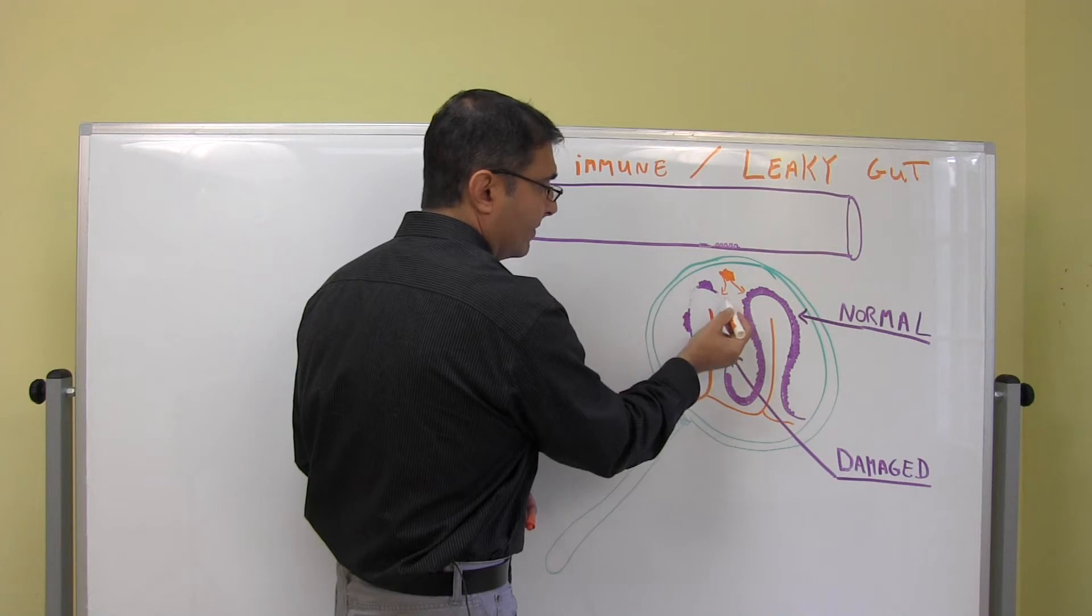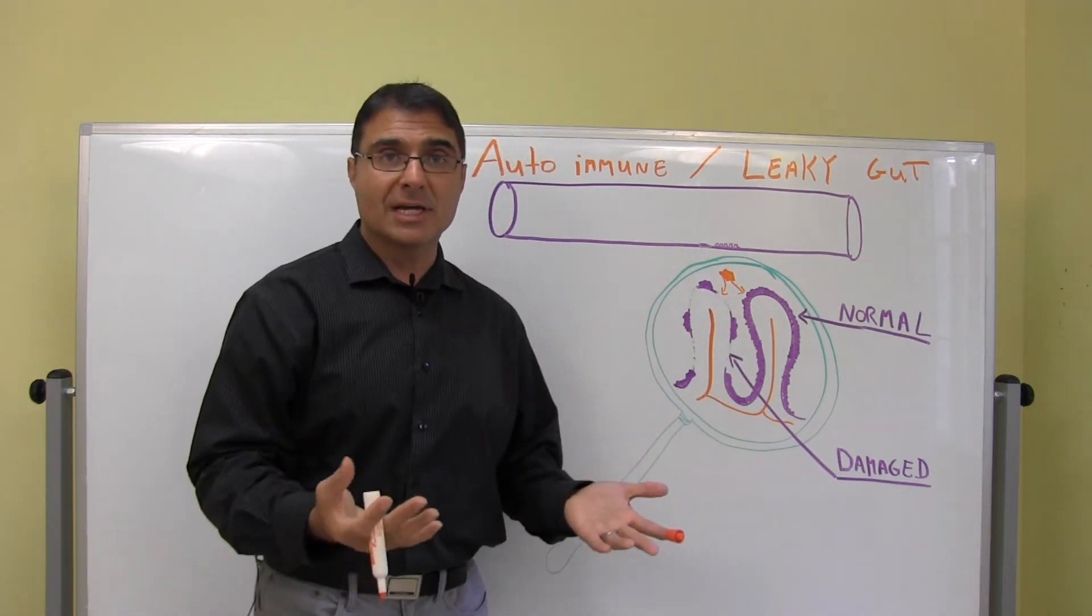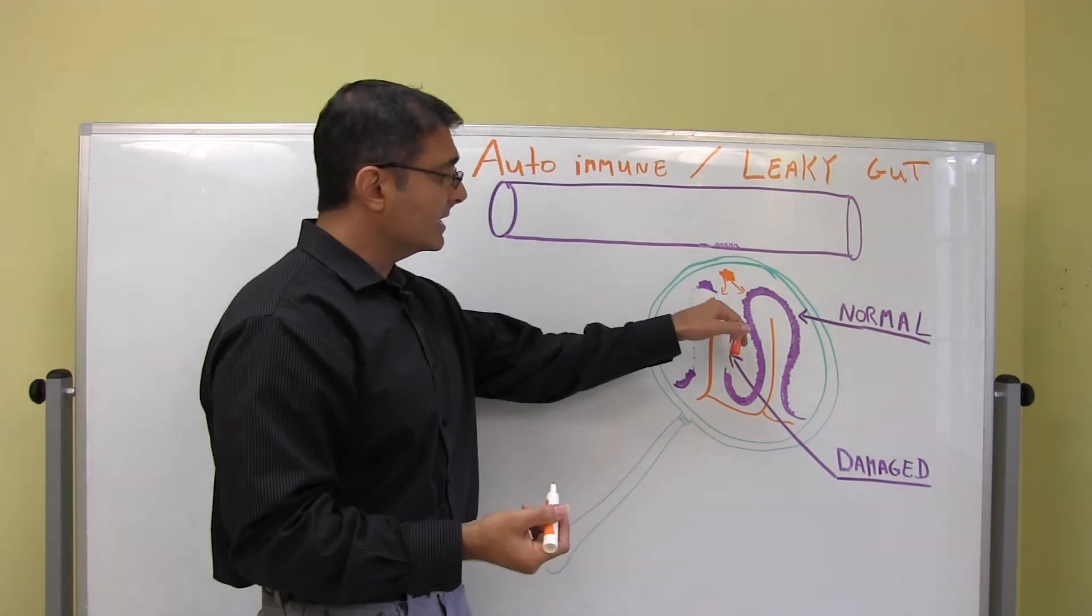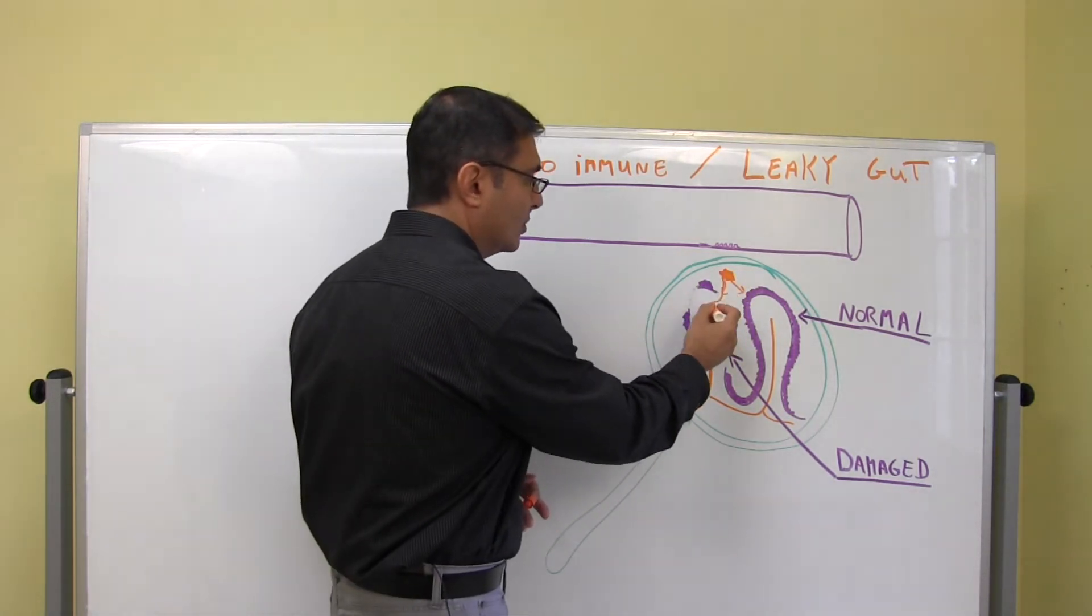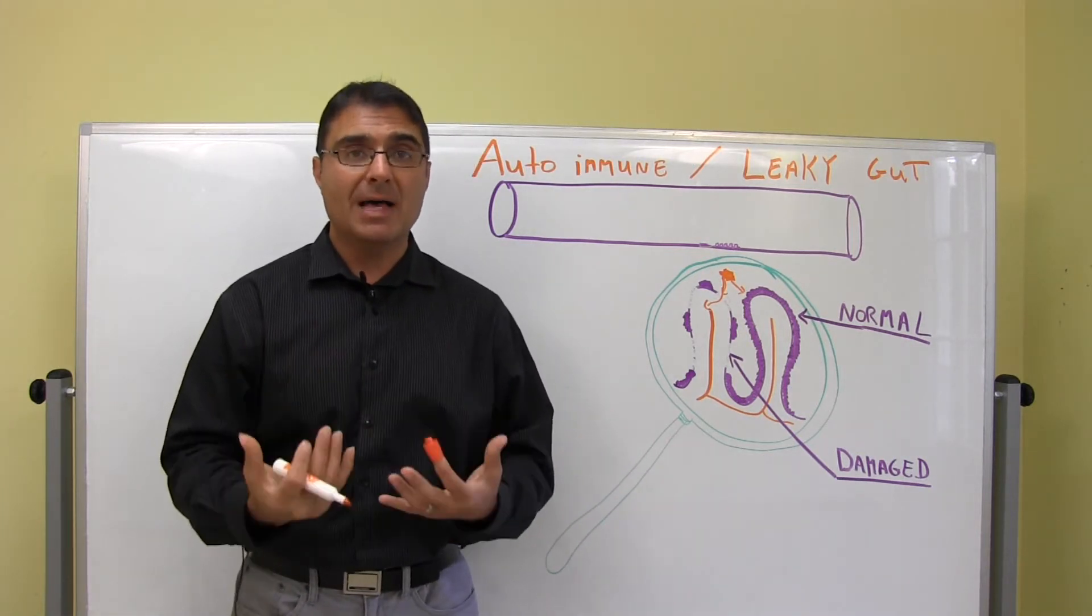In this case, though, the villi and the micro villi have been damaged by the presence of parasites. So in this case, the toxin now can get into the bloodstream. Once that toxin gets into the bloodstream, it can deposit in places.